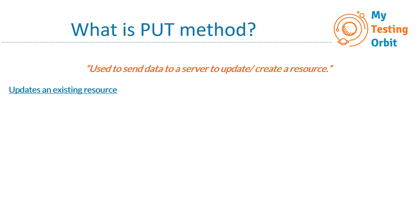When we send a PUT request to update a specific resource, if that resource already exists then it is updated as per the request. In this case we can receive two responses: either 200 (OK) or 204 (No Content). 200 means the request has been successfully completed and we will also see in the response body what was updated. 204 means the request was still successfully completed but there is no additional content to send in the response body. In both cases the request has been successfully fulfilled.